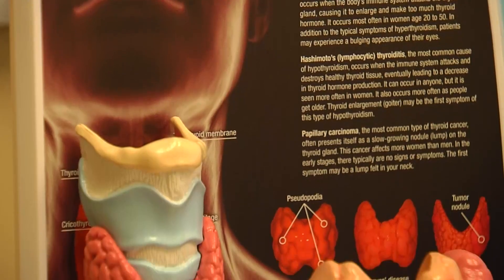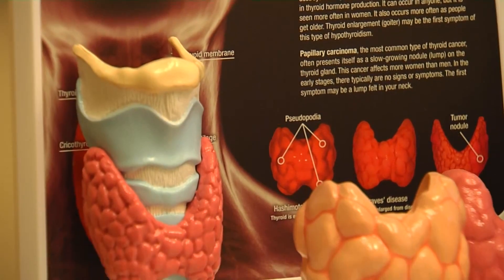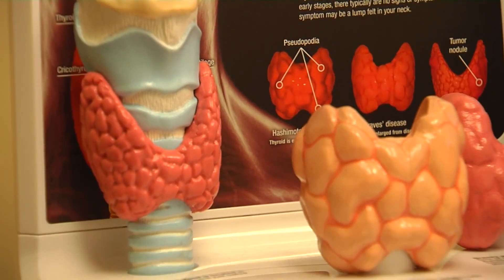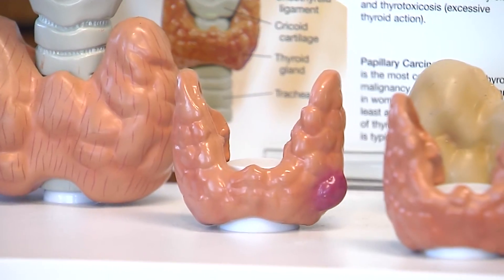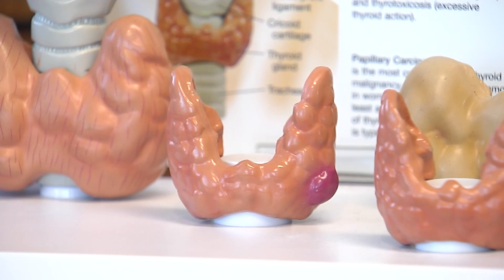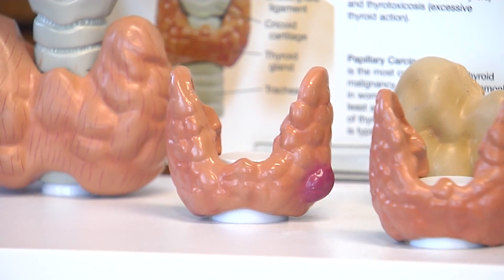Overactive, underactive — two common ways our thyroid can go wrong. For such a tiny organ, it plays a big role in health, producing a hormone that regulates metabolism. If it has any malfunction, less production or overproduction can affect mostly all your body.